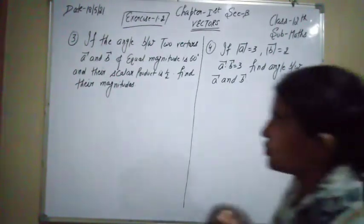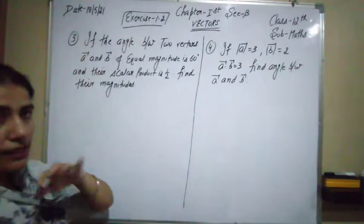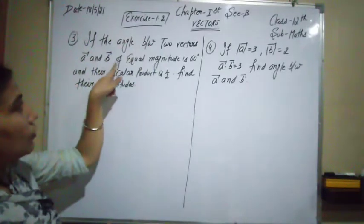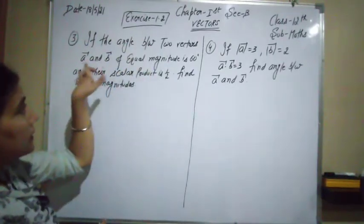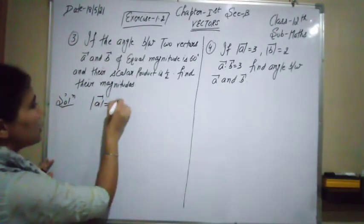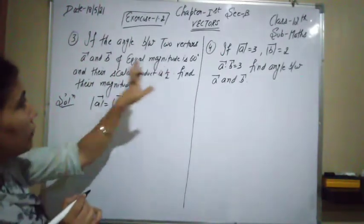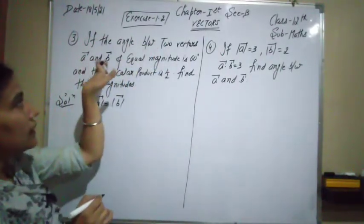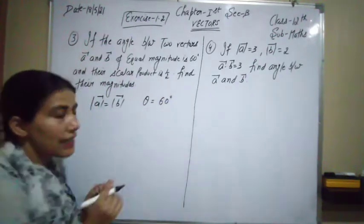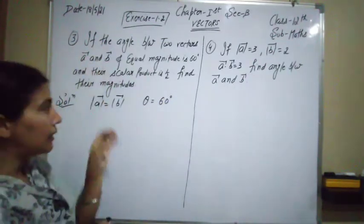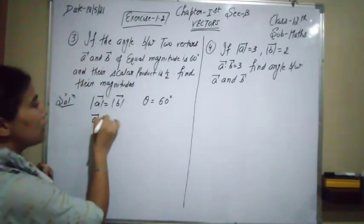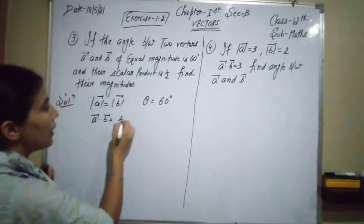The third question states: if the angle between two vectors a⃗ and b⃗ of equal magnitude is θ = 60°, and their scalar (dot) product is 1/2, find the magnitude. So |a⃗| = |b⃗|, θ = 60°, and a⃗·b⃗ = 1/2. We use the formula: a⃗·b⃗ = |a⃗||b⃗| cos θ.